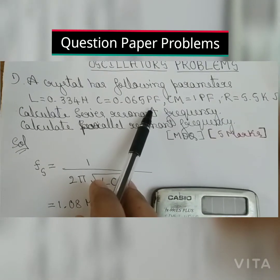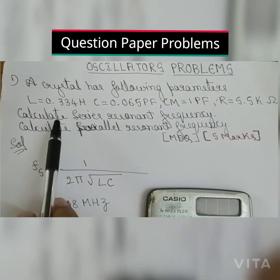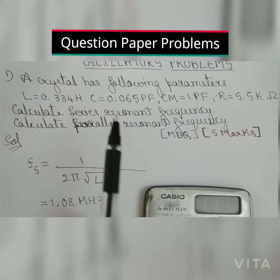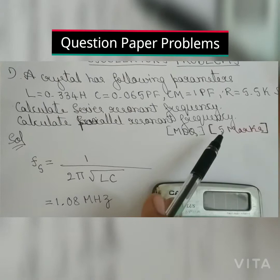CM equals 1 picofarad and resistance R equals 5.5 kilo ohm. Calculate series resonant frequency. Calculate parallel resonant frequency. This question is in the model question paper and is given for 5 marks.